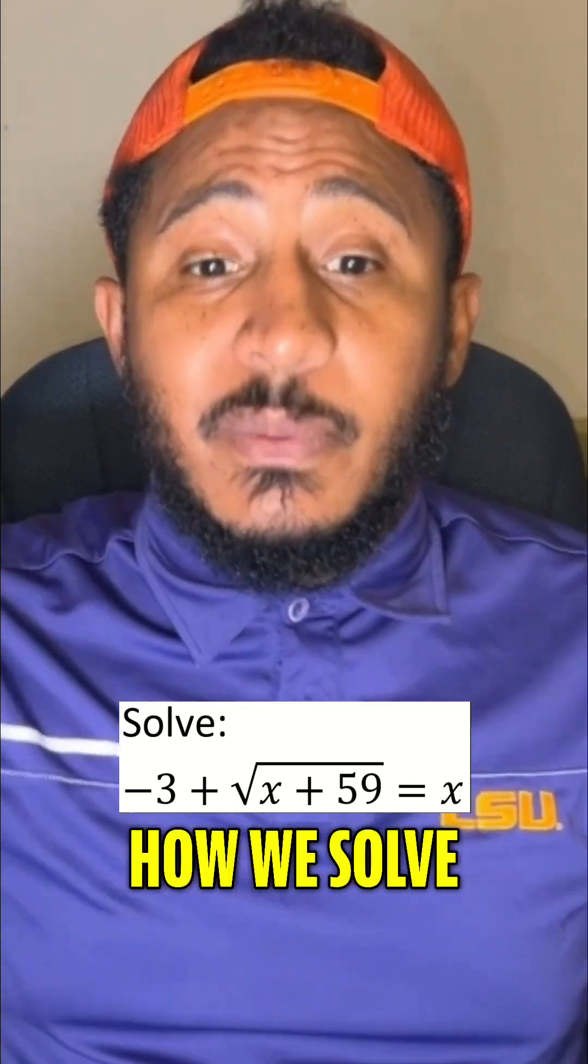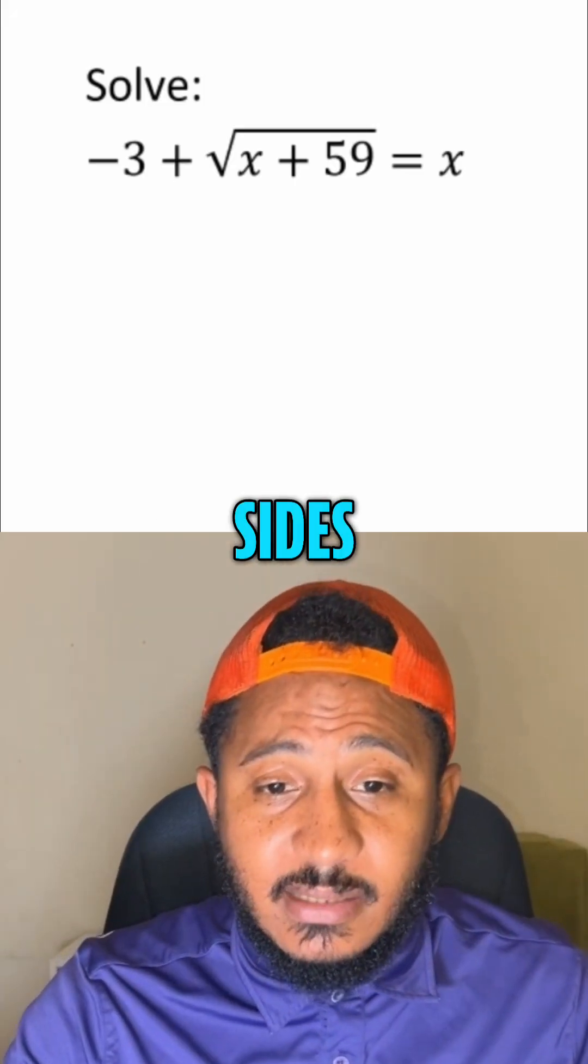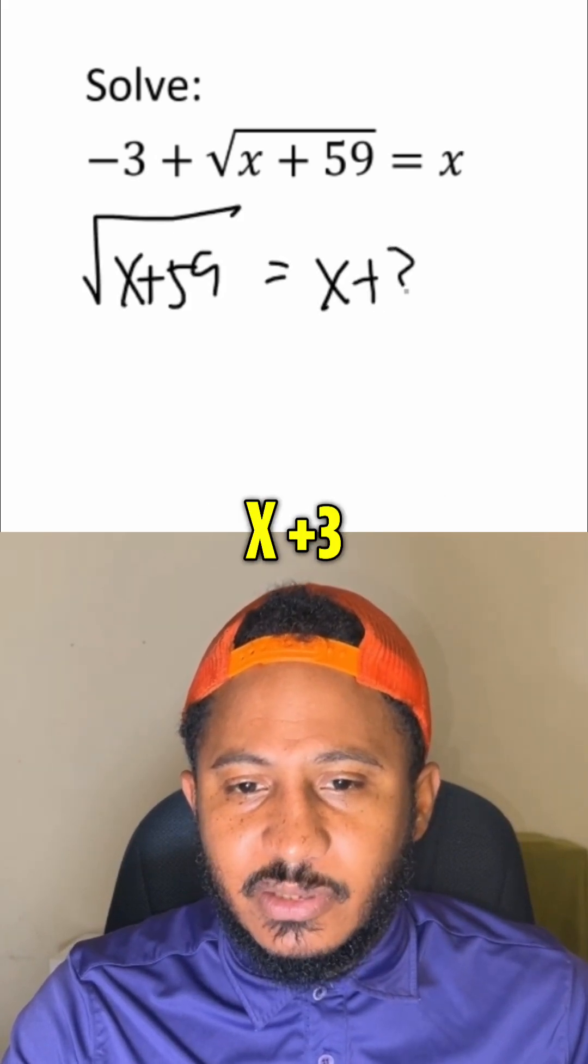It's the math guy, Steve. Let's try solving this equation. All right, so how we solve this one is first by isolating the radical. So we have to add 3 to both sides. So that would give us the square root of x plus 59 equals x plus 3.